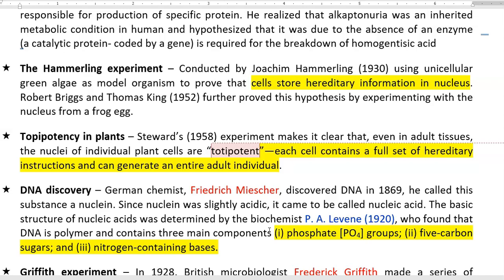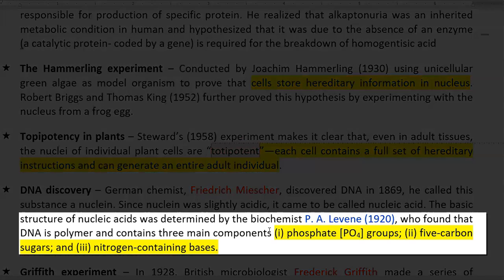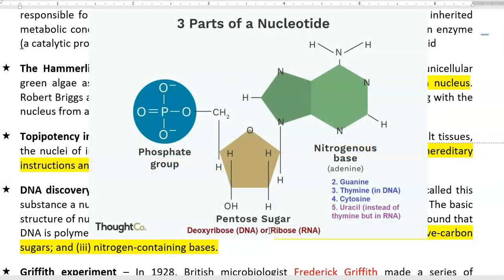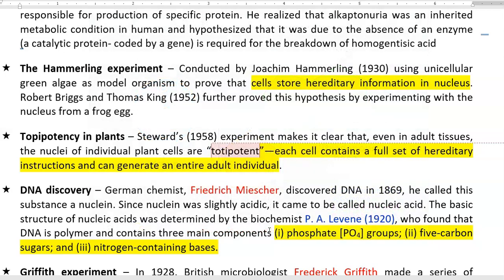The basic structure of nucleic acid was determined by another scientist named P.A. Levine. He found that DNA is a polymer and it contains three main components: a phosphate group, a 5-carbon pentose sugar — which may be deoxyribose or ribose sugar — and the nitrogenous bases, which include adenine, guanine, thymine, and cytosine. These are the four different kinds of nitrogenous bases present in DNA, and all three components together make up the DNA molecule.